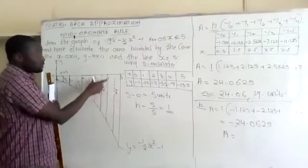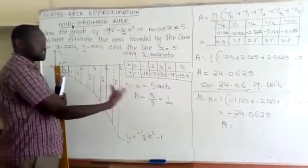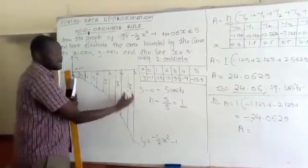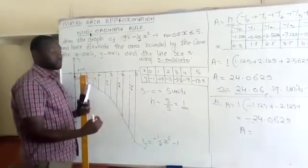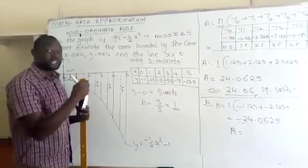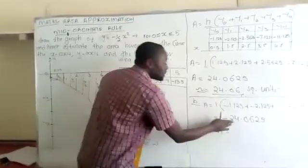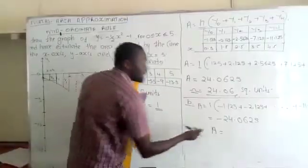So when we go ahead now to give the answer, even though we've calculated the area and gotten negative 24.0625, we'll give the area as the absolute value without showing the negative.